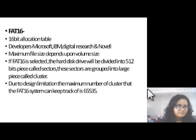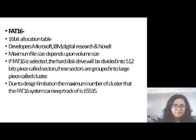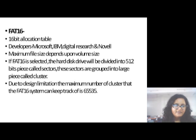FAT16, a 16-bit allocation table, was developed by Microsoft, IBM, Digital Research, and Novell. The maximum file size depends upon the volume size. If FAT16 is selected, the hard drive will be divided into 512-byte units called sectors. These sectors are grouped into larger clusters. Due to design limitations, the maximum number of clusters that the file system can keep track of is 65,535.